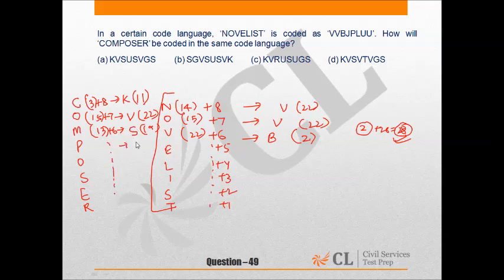Similarly, you will get U, S, V, G, and S. Hence, our answer is option A, because KVSUSVGS is given in option A.